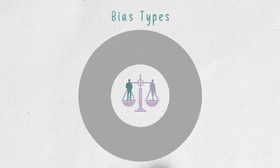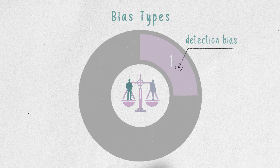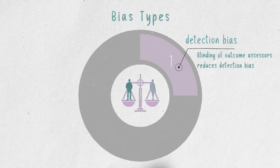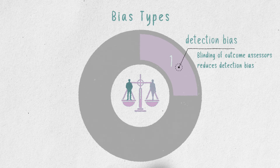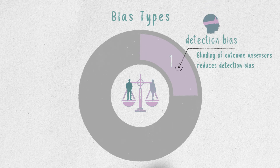During this video we mentioned bias types multiple times — but what are they exactly? First, detection bias is the risk of how the evaluation of the outcome affects results. Blinding of outcome assessors reduces detection bias. Outcome assessors like study nurses or investigators are aware of the actual treatment, so they may unconsciously or intentionally alter their assessment.